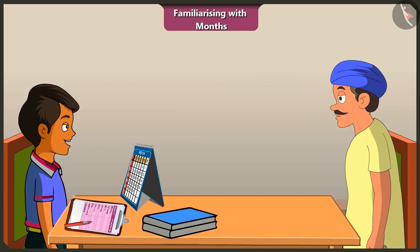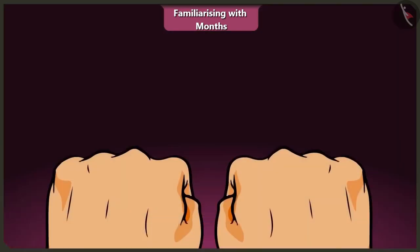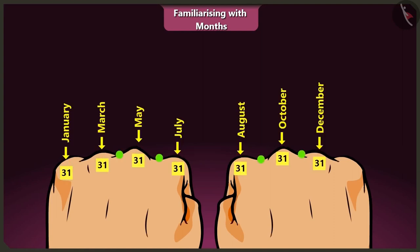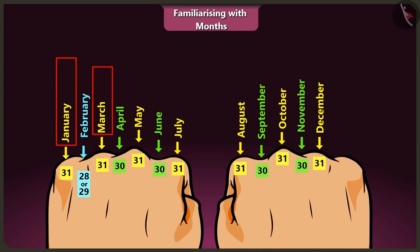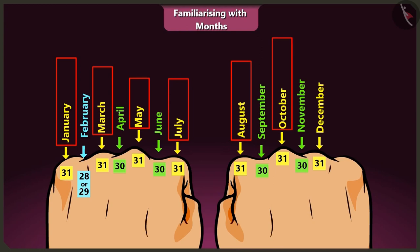Yes, please teach me, Uncle. Okay, I will teach you. First of all, move both hands forward like this. The long months with 31 days are the elevated parts of the fingers, and the short months with 30 days come at the places between the fingers. But February has 28 or 29 days. There are 31 days in January, March, May, July, August, October and December.